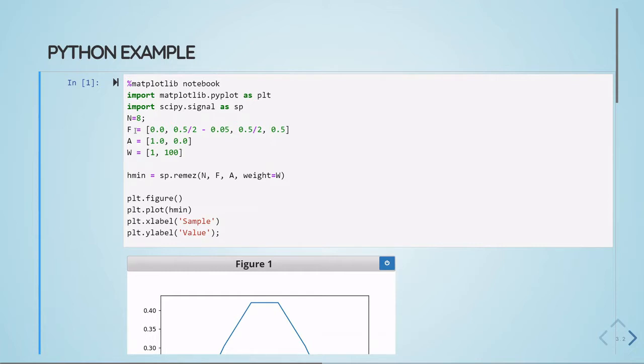Here we are defining the vectors and the amplitude and giving the weights, so we are giving a weight 1 and weight 100.